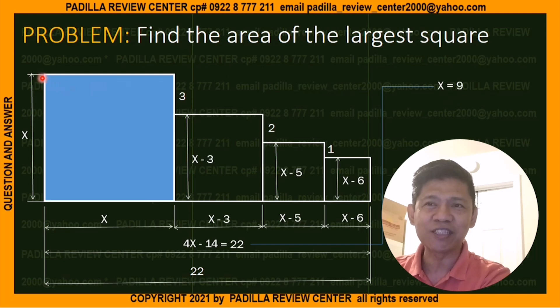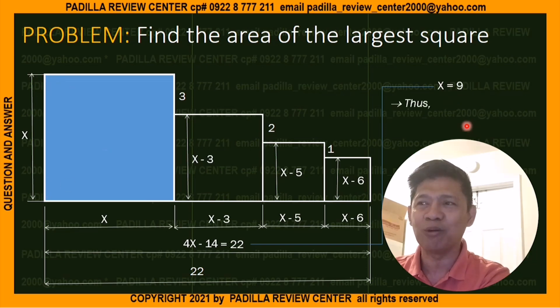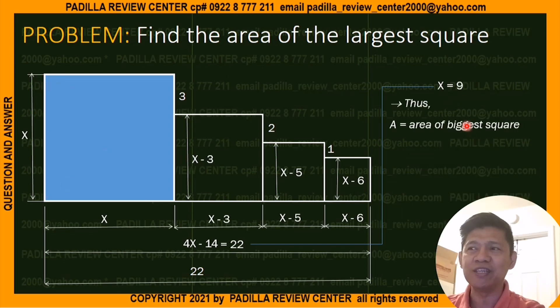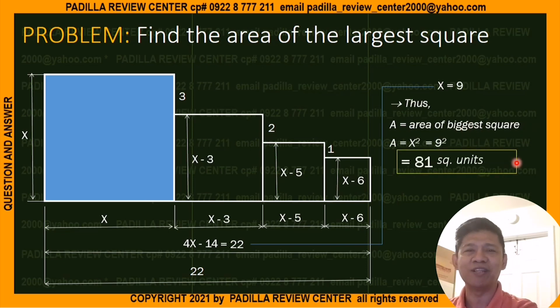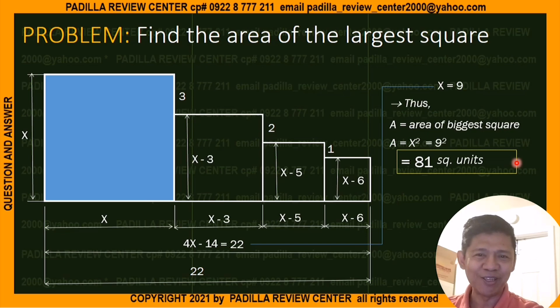So the side of the largest square is 9. The area of the square is going to be equal to x squared, which is 9 squared, and that is 81.